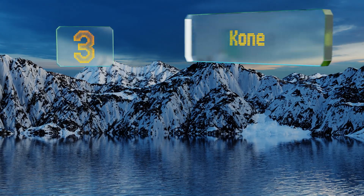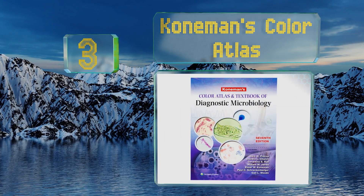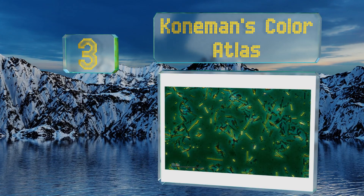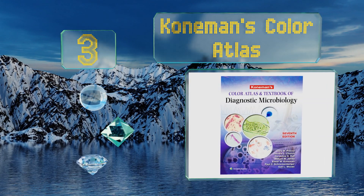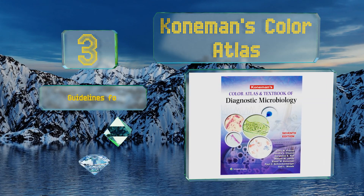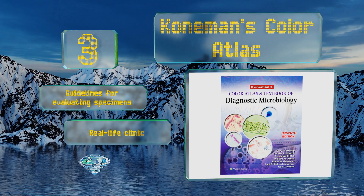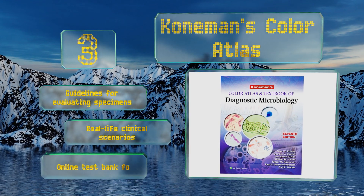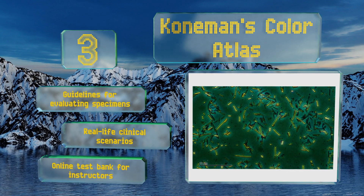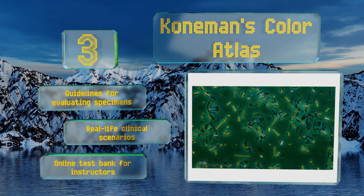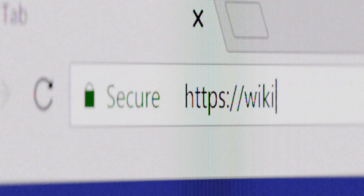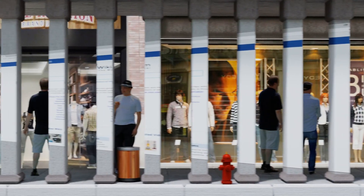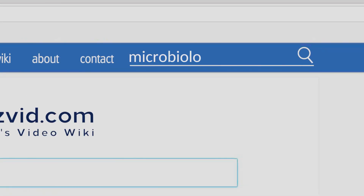Nearing the top of our list at number 3: the impressively thick Conemans Color Atlas has enough information to guide you all the way from novice to expert. At more than 1,800 pages, this comprehensive volume features full color images, guidelines for evaluating specimens, real-life clinical scenarios, and an online test bank for instructors.